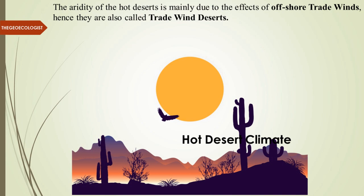The entity of hot deserts is mainly due to offshore trade winds, hence they are also known as trade wind deserts. 'Offshore' refers to the continental aspect — away from the shore, which is the ocean-land meeting point.